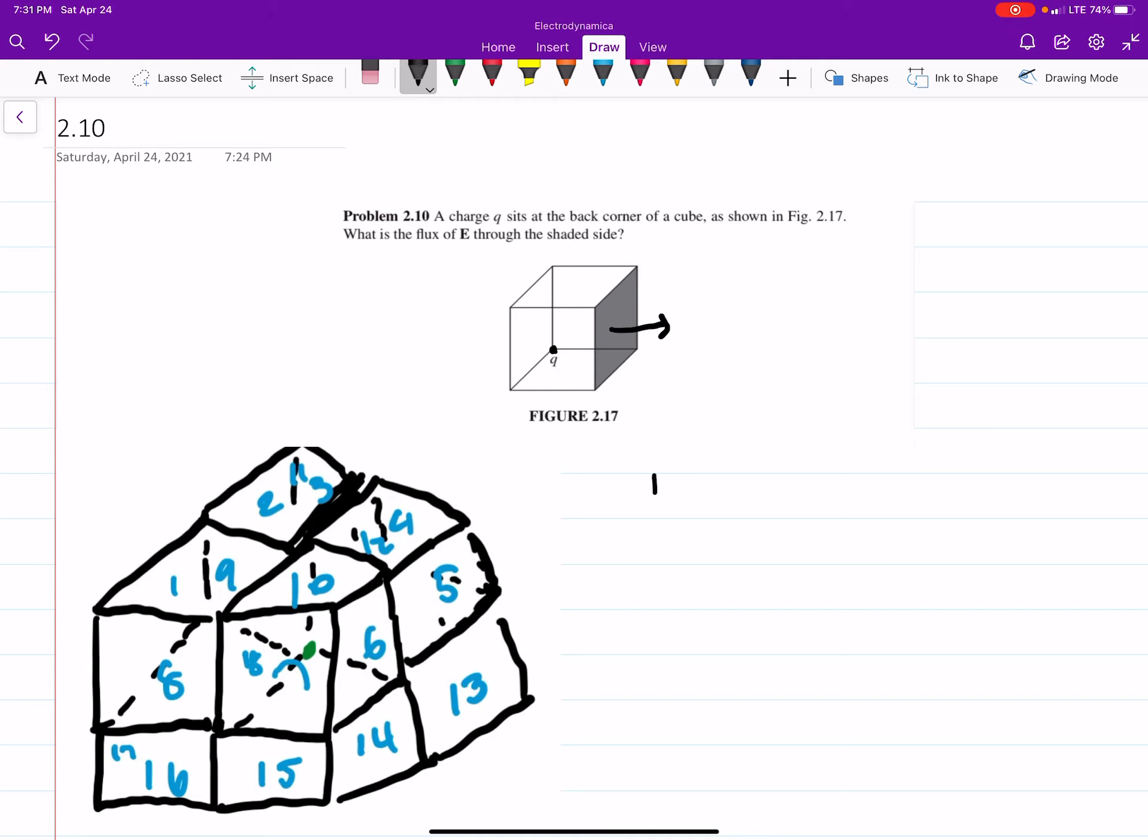So flux is going to be the integral, the closed path integral, of our E field dotted by dA. Now the big problem here is your E field, or your charge, is not in the center of our shape here, our cube. It's in a corner.